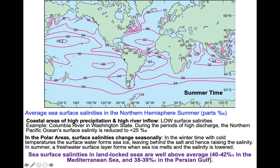This map shows the average sea surface salinities in the global ocean system in parts per thousand — we're looking at summertime. Pinkish lines show same-salinity isohaline lines. For example, this is the 35 parts per thousand isohaline line — isohaline means same salinity. As long as you stay on this pink curve, your seawater salinity is about 35 parts per thousand or 3.5%.